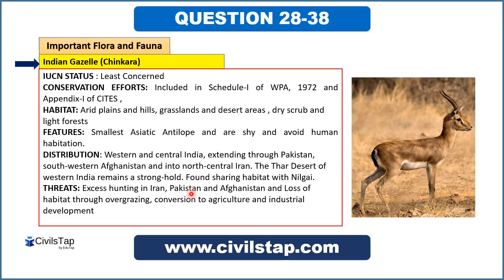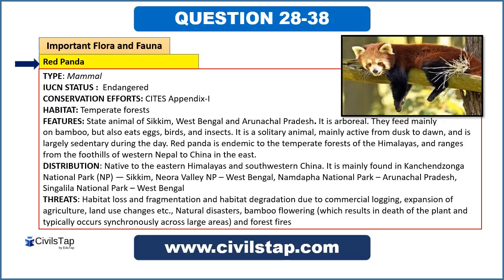The red panda is a species that is also the state animal of Sikkim, West Bengal, and Arunachal Pradesh. It is an arboreal animal that feeds mainly on bamboo and lives in temperate forest ecosystems. Main reasons for it being threatened are habitat loss and hunting.